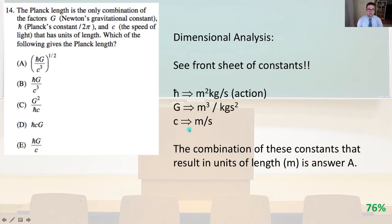Number 14. The Planck length is the only combination of the factors G, Newton's gravitational constant, H-bar, Planck's constant divided by 2 pi, and C, the speed of light that has units of length. Which of the following gives the Planck length? So we're going to do some dimensional analysis. You get to see your front sheet of constants. We can combine them all.